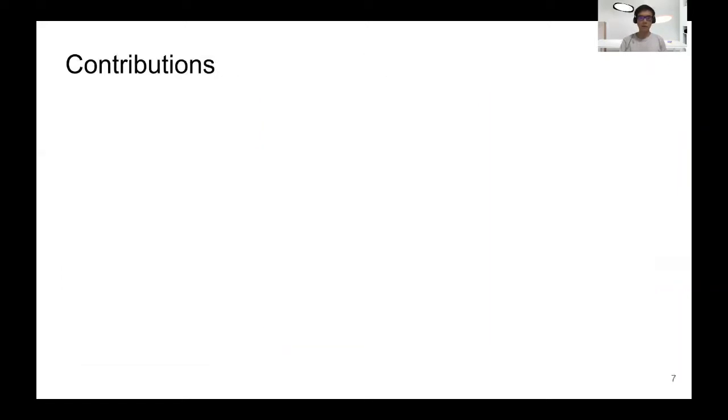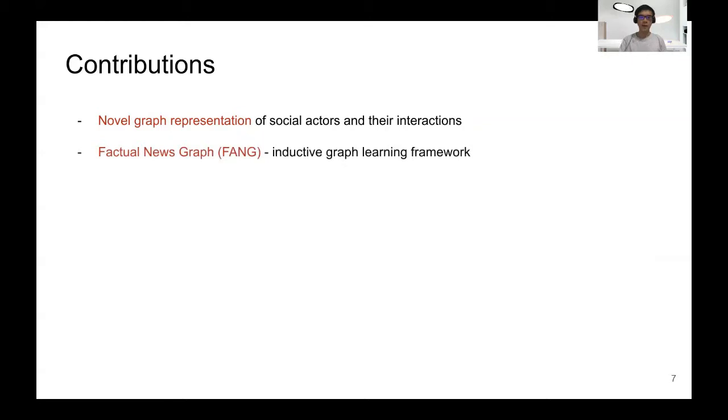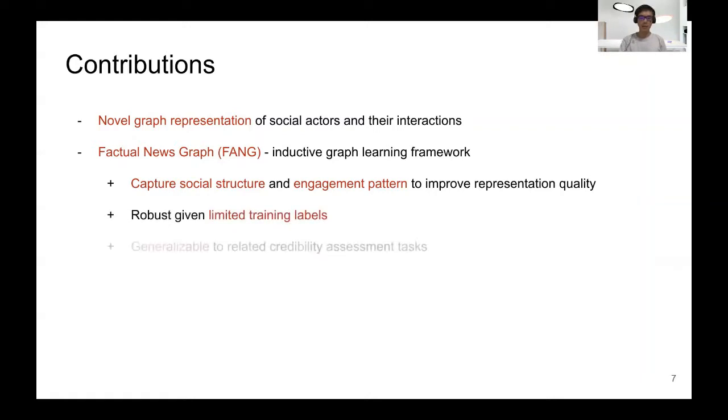This brings us to the contribution of this research. We propose a novel graph representation of the social context, including the social actors and their interactions. We also propose Factual News Graph, or FANG, which is an inductive graph learning framework. FANG can capture social structures and engagement patterns to improve representation quality. FANG is also shown to be robust given limited training labels, as well as producing generalizable representations to related credibility assessment tasks.